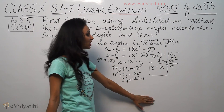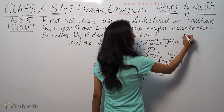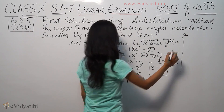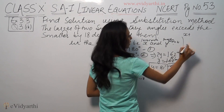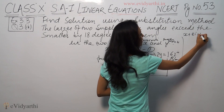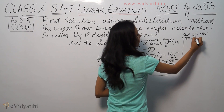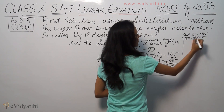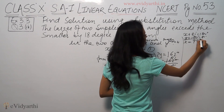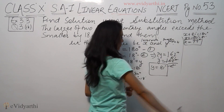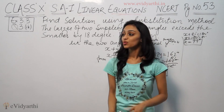Now using y's value to find x, we put y equals 81 degrees into the first equation: x plus 81 equals 180 degrees. So x equals 180 minus 81 degrees, which gives us x equals 99 degrees. So the larger angle is 99 degrees and the smaller angle is 81 degrees.